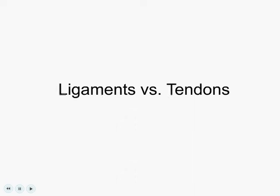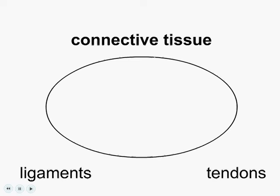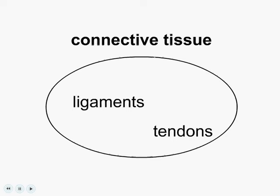We need to make sure that you understand the difference between ligaments and tendons. Ligaments and tendons are both part of the skeletal and muscular systems. Ligaments and tendons are connective tissue, and that means they connect things together.